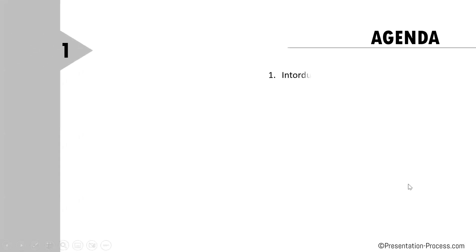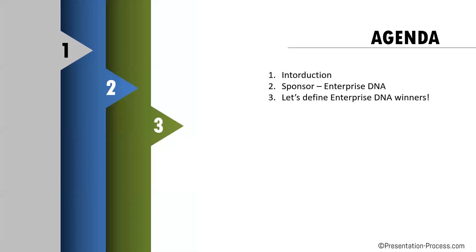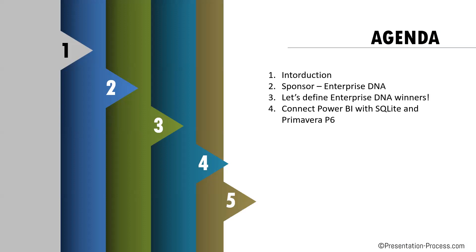Let's go on with our agenda. We'll have our introduction section, then give some information about our sponsor Enterprise DNA. We'll define our Enterprise DNA winners — three winners who will have full access to Enterprise DNA's portal. Then our lovely speaker from Australia, Bahit, will talk about connecting Power BI with SQLite and Primavera P6, followed by a Q&A session.